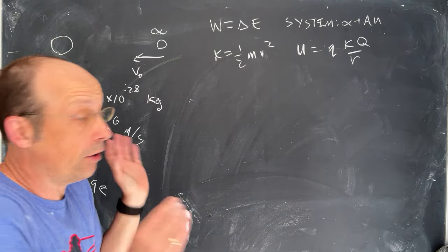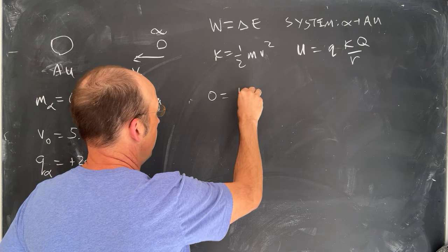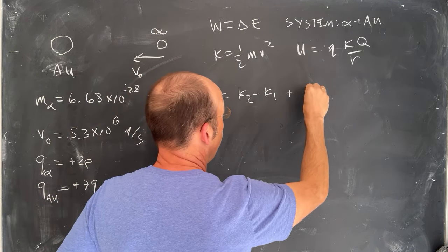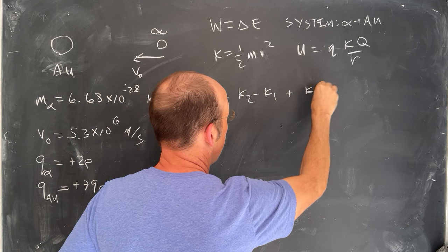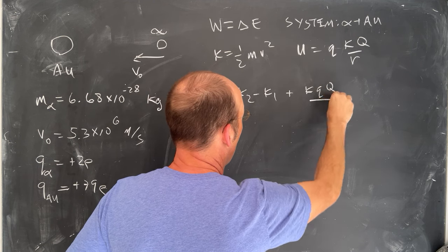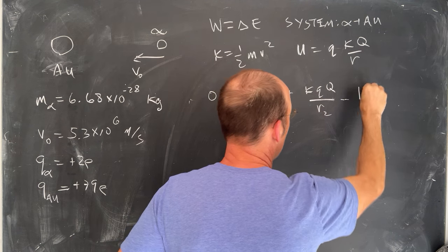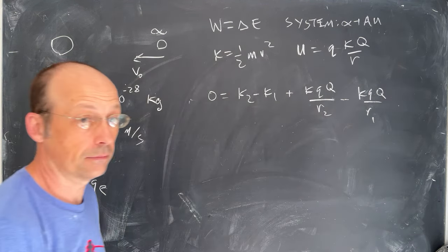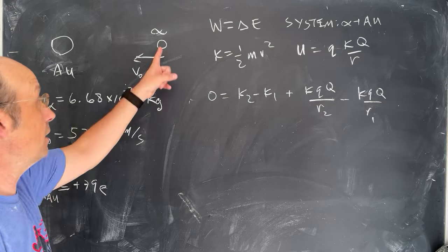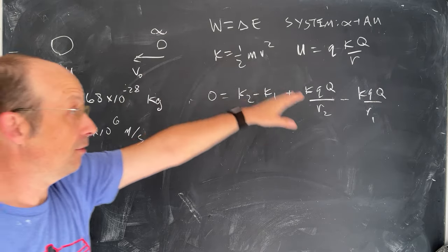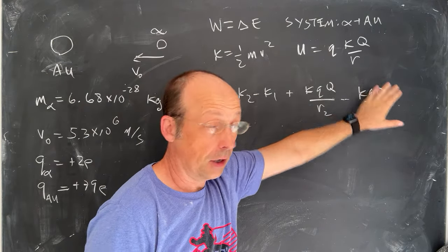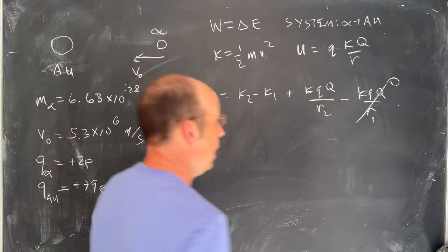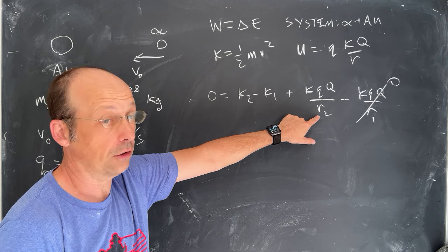So there's no work on the system so zero is going to be the final kinetic energy minus initial change in kinetic energy plus the final potential energy. I'll write this as KQQ over R2 minus initial KQQ over R1. Now where does this start? Let's assume it starts an infinite distance away or very, very far so this term goes to zero because R is very, very large. That's zero. And we're trying to find R2, how close it gets.